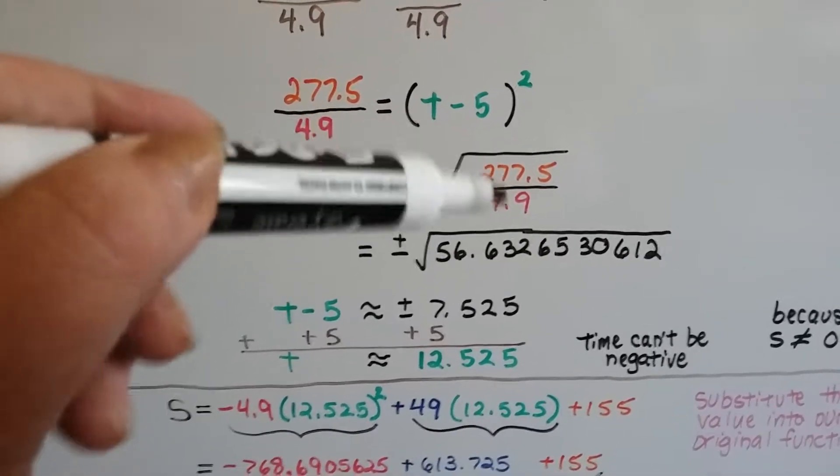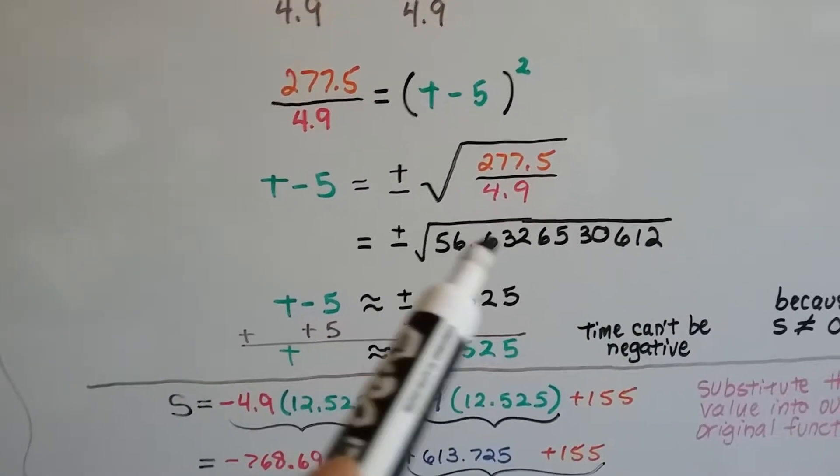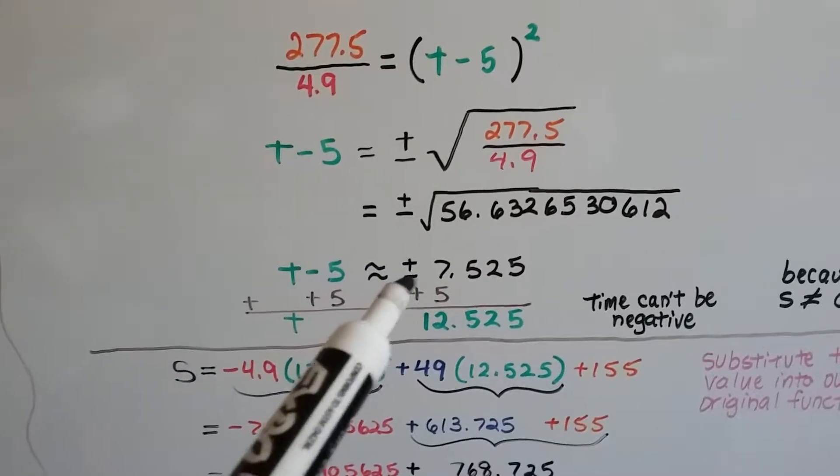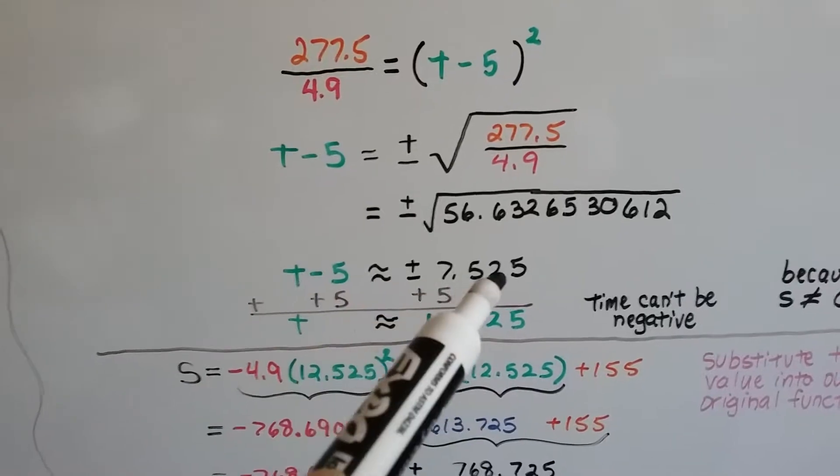We divide this. I used my calculator, and I got this nice long decimal. When I squared it, I got a 7.525. So we've got plus or minus 7.525.